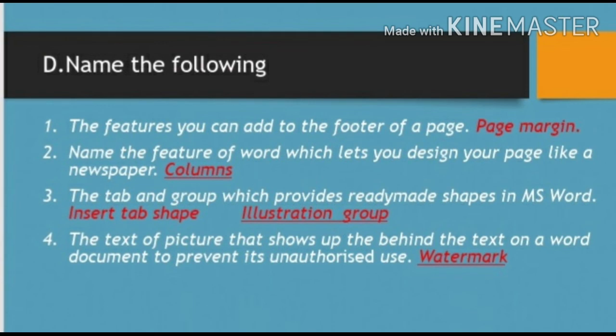The last exercise is exercise D: Name the following. Number one: The features you can add to the footer of a page. Answer: Page Number. Number two: Name the feature of Word which lets you design your page like a newspaper. Answer: Columns. Number three: The tab and group which provides ready-made shapes in MS Word. Answer: Insert Tab, Shapes, Illustration Group. Number four: The text or picture that shows up behind the text on a Word document to prevent its unauthorized use. Answer: Watermark.